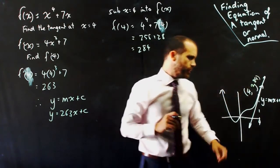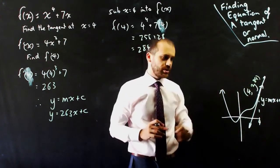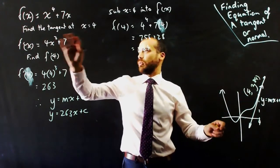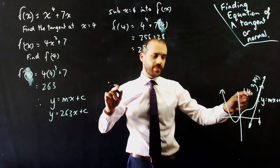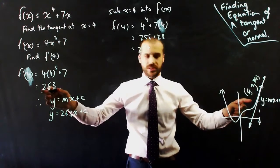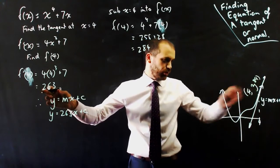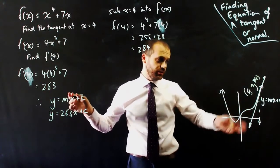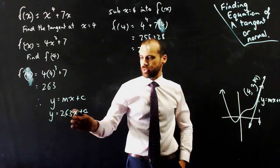Okay, so summarizing so far, I have this funky equation and I know that when x = 4, the gradient is 263 at that point on the curvy line, which means that it's also the gradient of my straight line. So y = 263x + c.